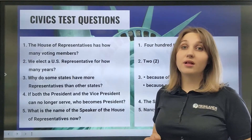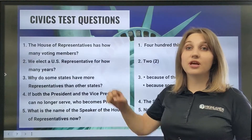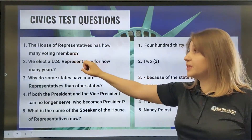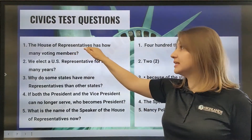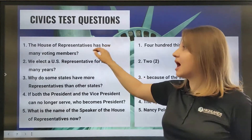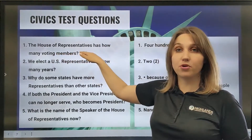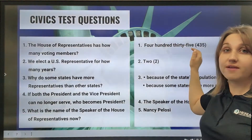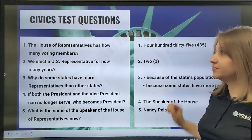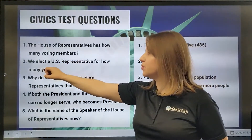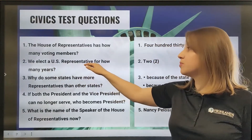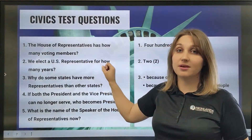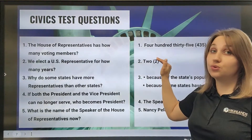As a summary, let's look at some civics test questions. Question one: how many voting members does the House of Representatives have? The answer is 435. Question two: for how many years do we elect a US representative? The answer is two years.